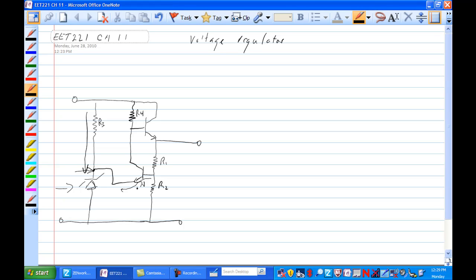We'd have a 0.7 volt drop here. We have V Zener here. So at this point here, we have V Zener plus 0.7 volts. V R2 is equal to V Zener plus 0.7 volts.